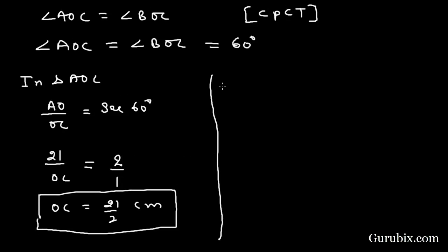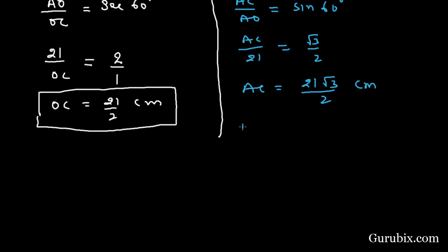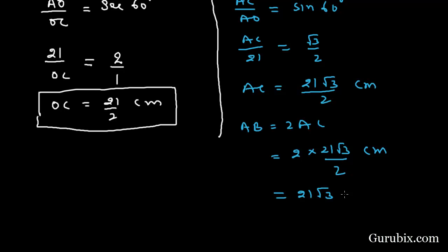Again in triangle AOC, we find the ratio of AC over AO, which is sin theta — perpendicular over hypotenuse. Sin 60 degrees equals square root of 3 over 2. AO is 21 cm, so AC equals 21 times square root of 3 over 2 cm. Therefore AB equals 2 times AC, which equals 2 times 21 root 3 over 2, giving AB equals 21 root 3 cm.